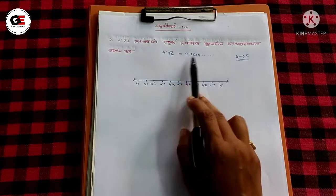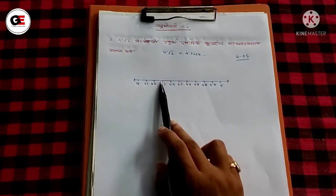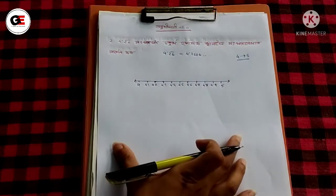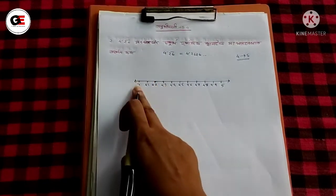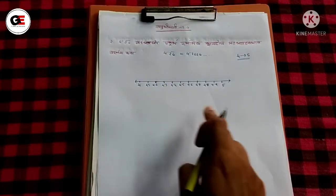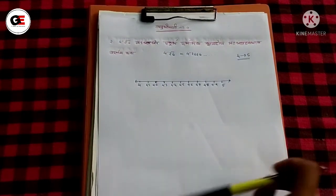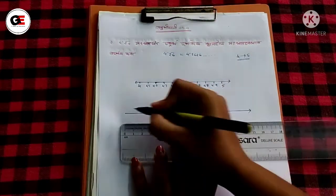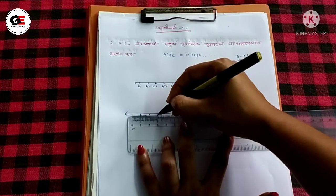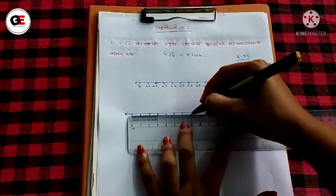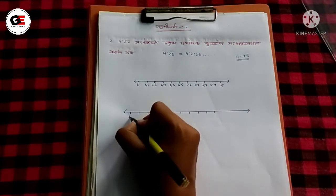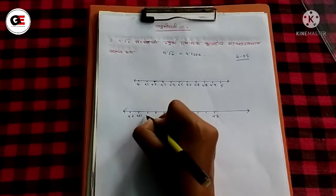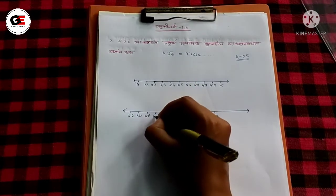We can see 4.26 lies between 4.2 and 4.3. So we focus on the interval between 4.2 and 4.3.